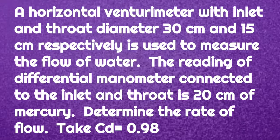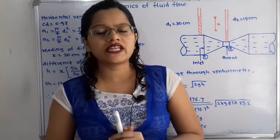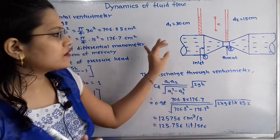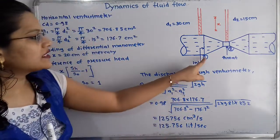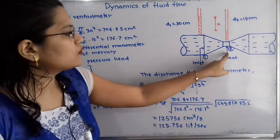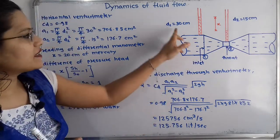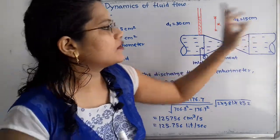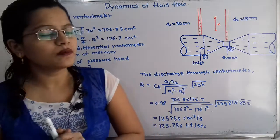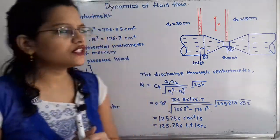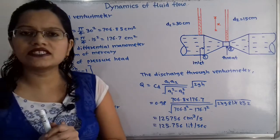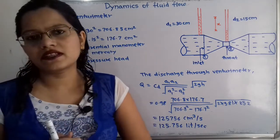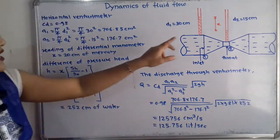Let us understand the diagram as per the given data. We draw a horizontal venturimeter considering section 1 at inlet and section 2 at throat. The diameter at inlet d1 is equal to 30 centimeter, diameter at throat d2 is equal to 15 centimeter, and the coefficient of venturimeter Cd is equal to 0.98.